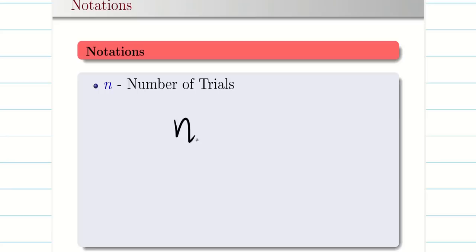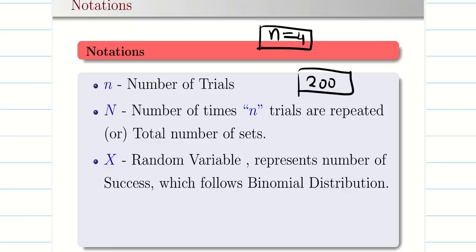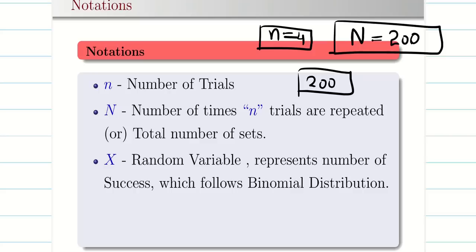Small n represents the number of trials. Capital N is the number of times n trials are repeated. For example, you have a bakery with 4 different kinds of cakes, and 200 families around the bakery are going to buy cake in different combinations. Here, n equals 4 (number of cakes) and capital N is 200 (the number of families buying). I hope you understand the difference between small n and capital N.